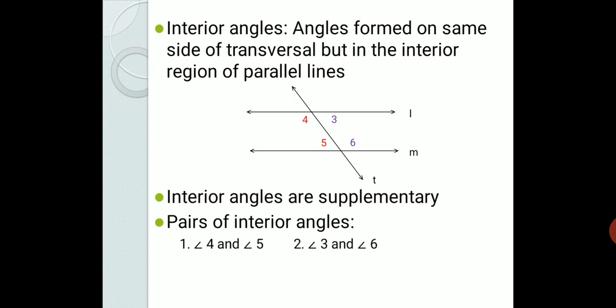Let us quickly revise. First, we learned corresponding angles, which are congruent to each other. Second, we learned interior angles, which are not congruent but are supplementary — that is, their addition is 180 degrees.